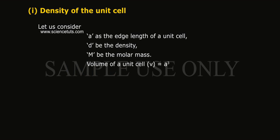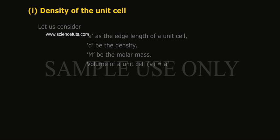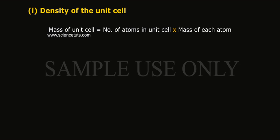Let us consider a as the edge length of a unit cell, d be the density, M be the molar mass. Volume of a unit cell V is equal to a³. Mass of unit cell is equal to number of atoms in unit cell into mass of each atom.